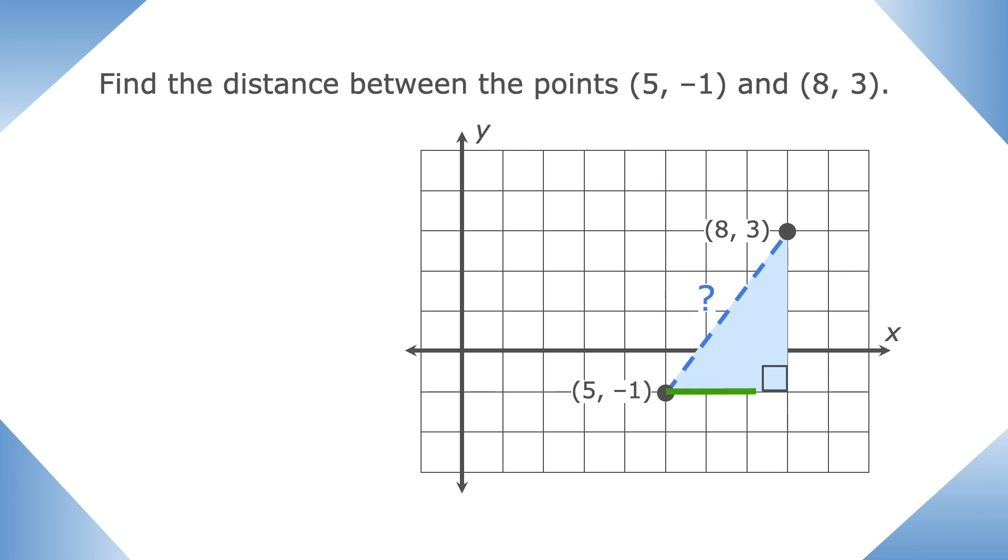This is the horizontal distance between our points, which we can find by subtracting the x coordinates. 8 minus 5 is 3. And this is the vertical distance between our points. So we'll subtract the y coordinates to find it. 3 minus negative 1 is 4.